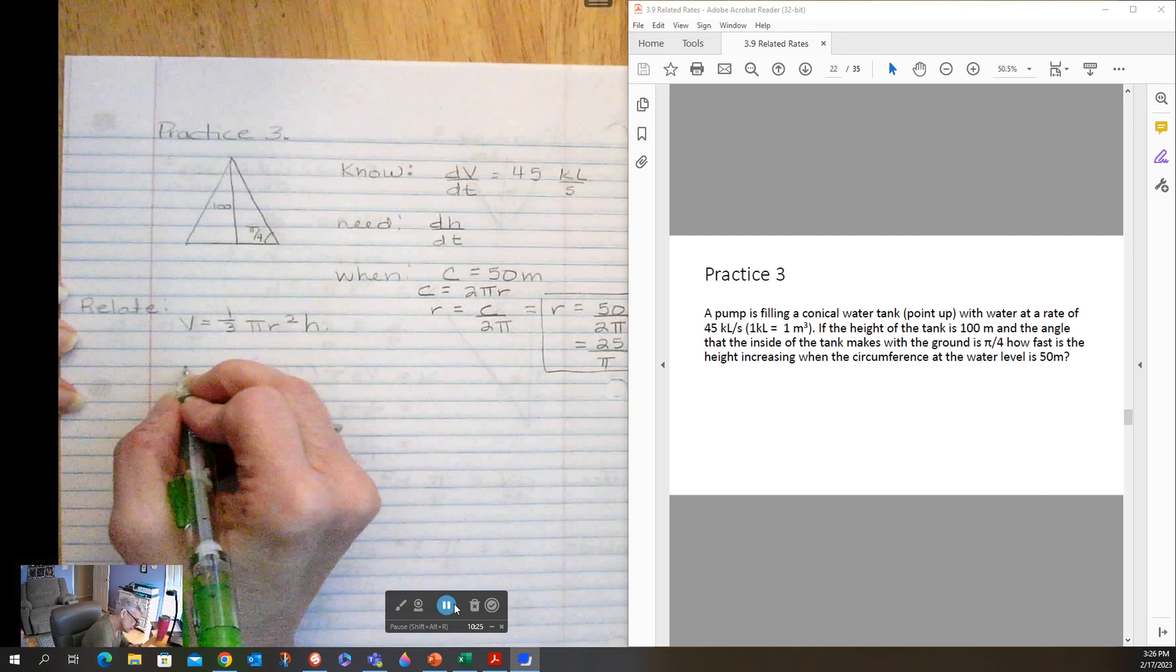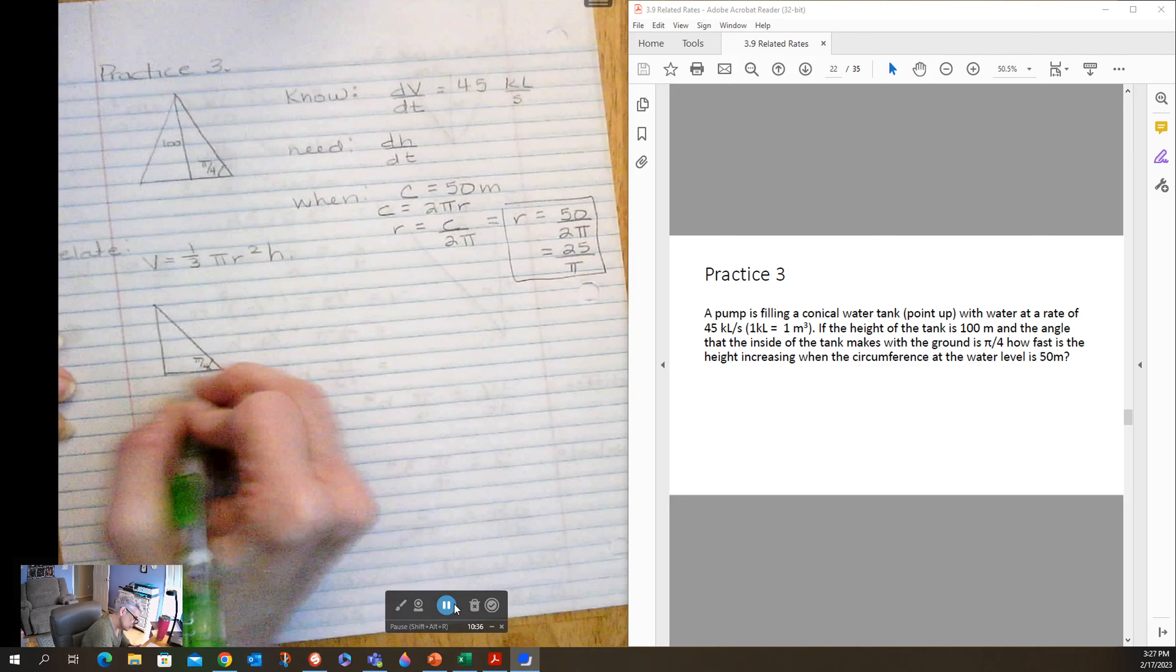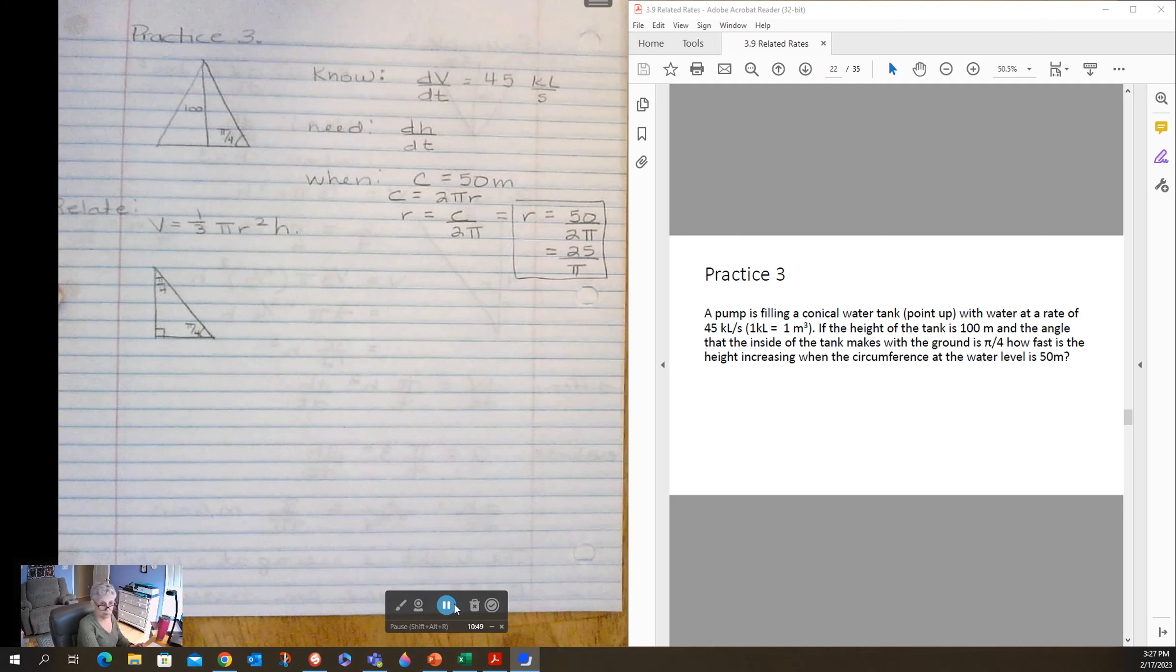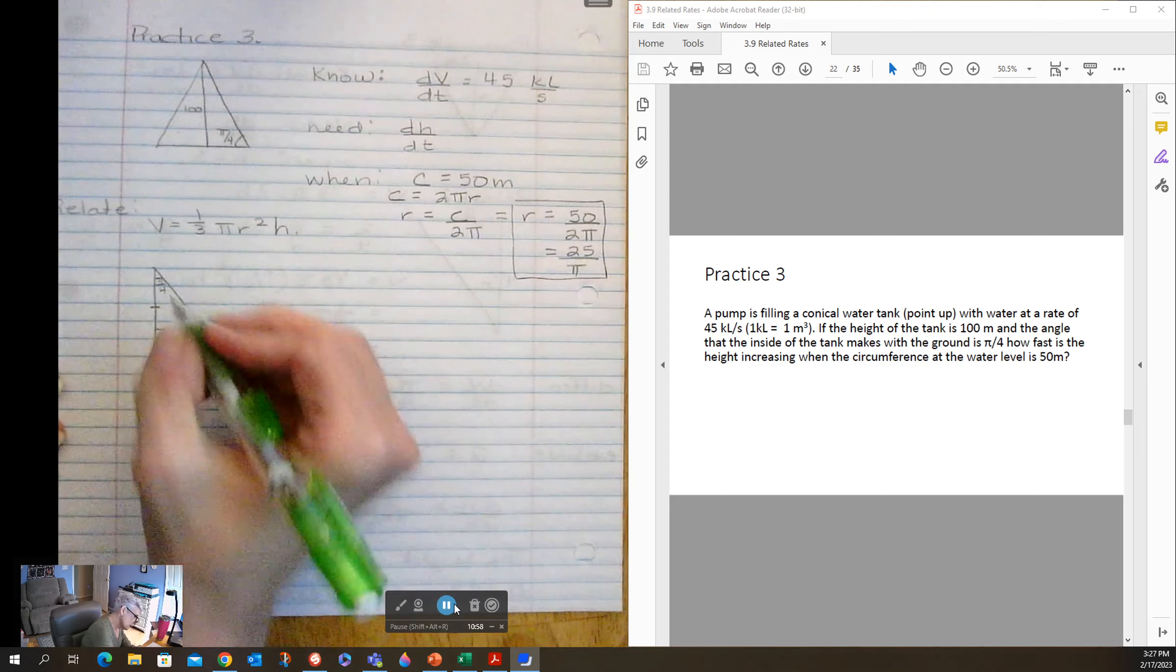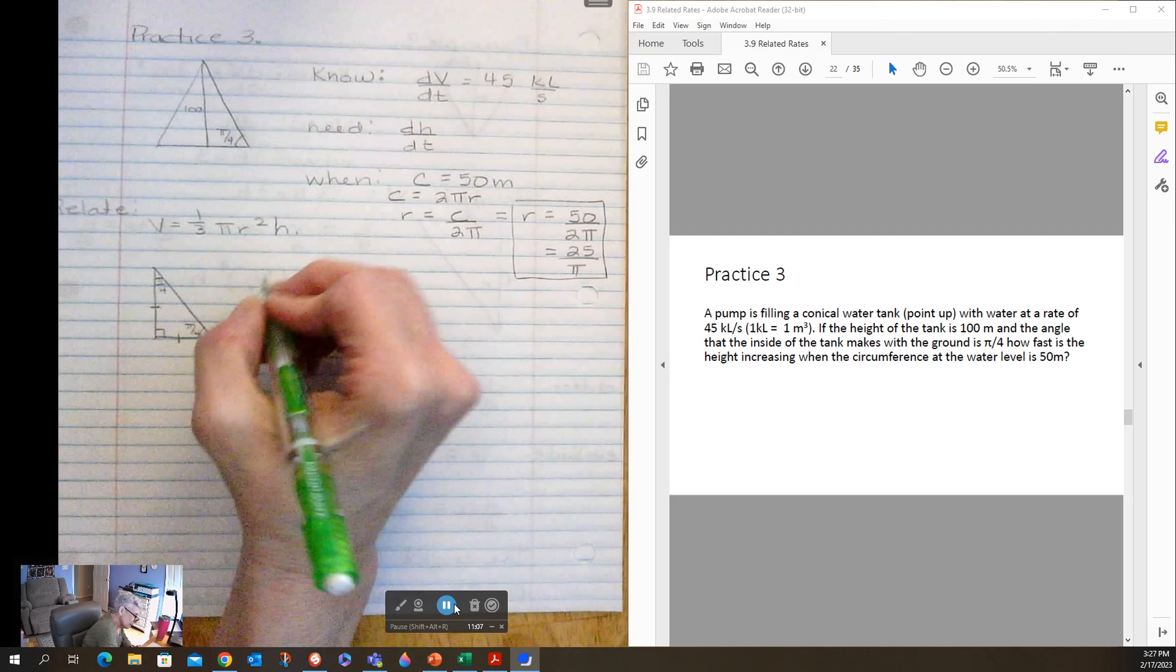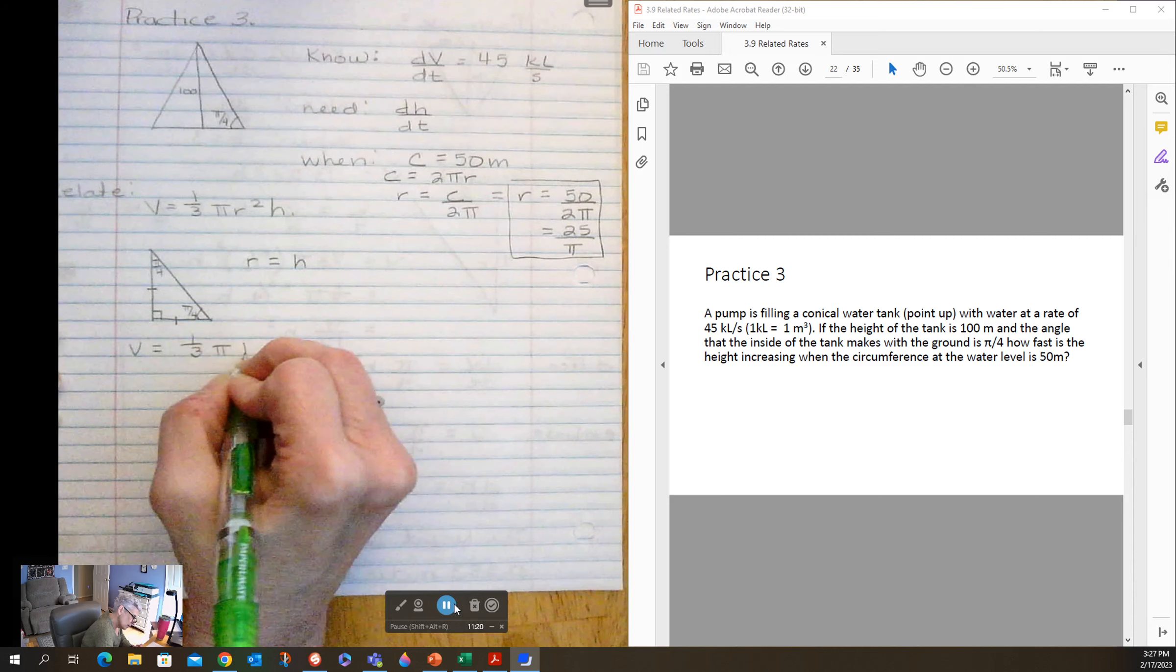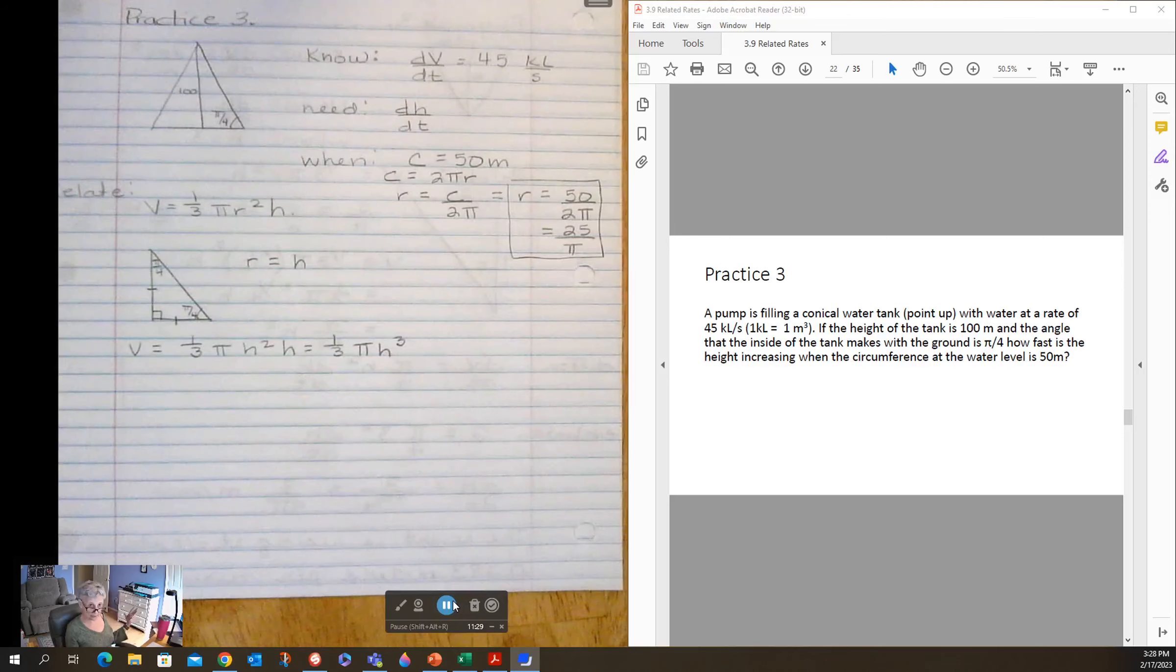So let's look at this triangle I have here. If this is pi over four and this is a right triangle, well, even though you can't tell it from my graph, this also has to be pi over four, which means this length has to be exactly the same as that length because that's how things work. So that means that my radius is the exact same as my height. Well, that makes life easier. So now volume is just one-third pi h squared h, which is one-third pi h cubed. It's really easy to differentiate.